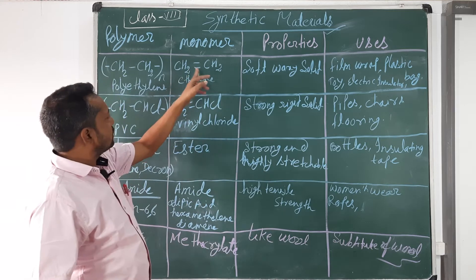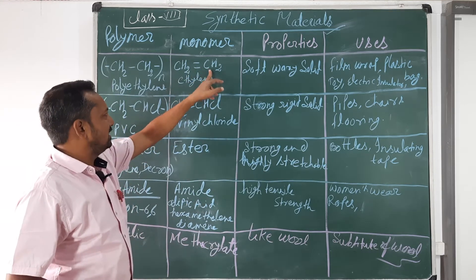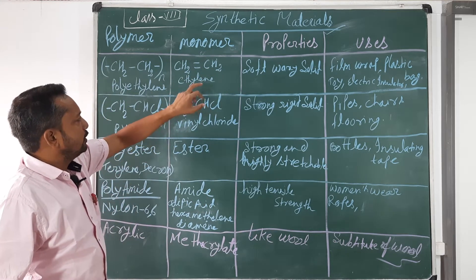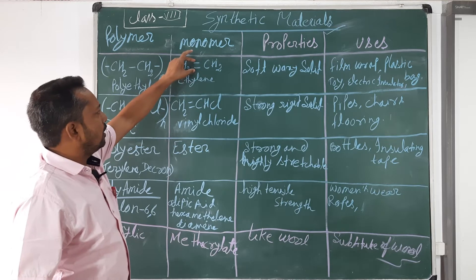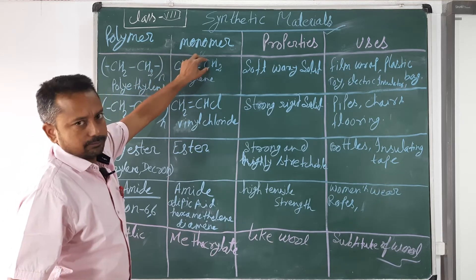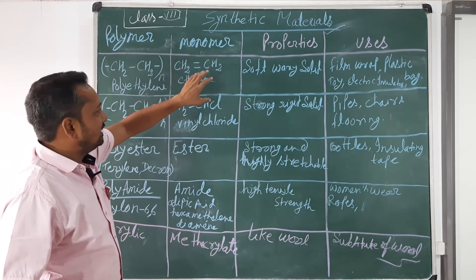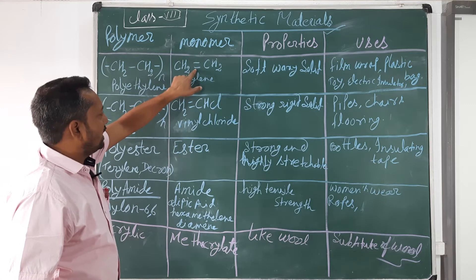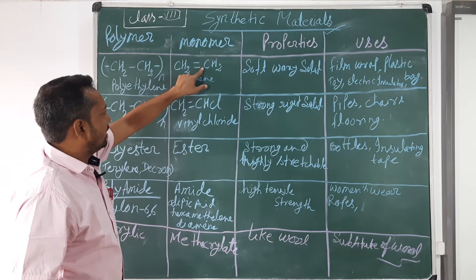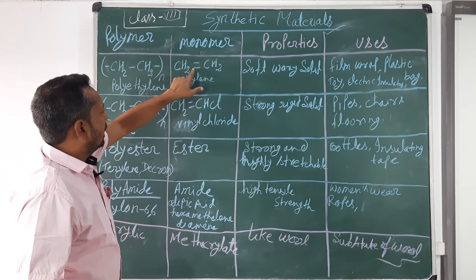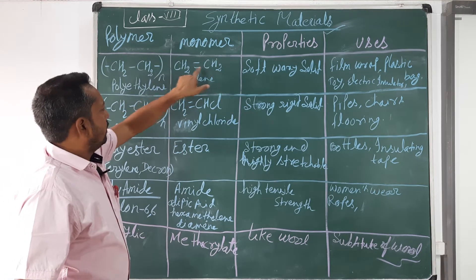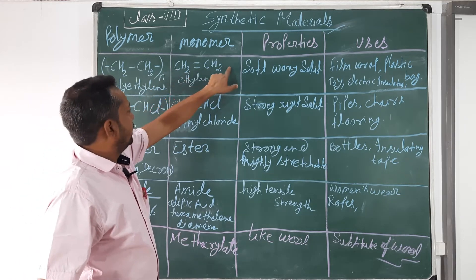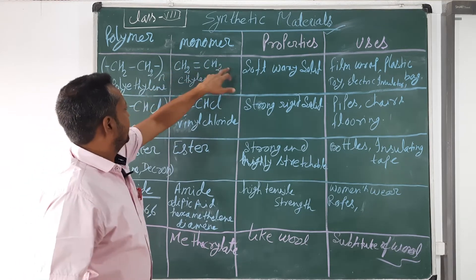The monomer CH2=CH2 is ethylene, in which one double bond is present between two carbon atoms. When heated strongly, the pi bond breaks down and each carbon atom has one bond open on each side, allowing polymerization to occur.